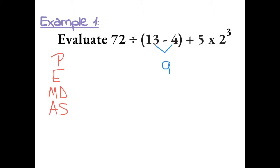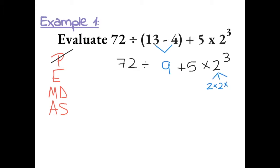Now we can bring everything else down: 72 divided by 9 plus 5 times 2 to the third. Because we finished parentheses, now we can go on to exponents. 2 to the third is the same as 2 being multiplied by itself 3 times. 2 times 2 gives us 4, and 4 times 2 more gives us 8. Now we can bring everything else down.